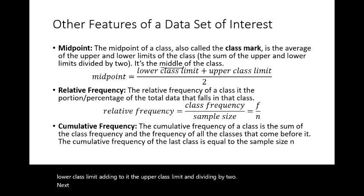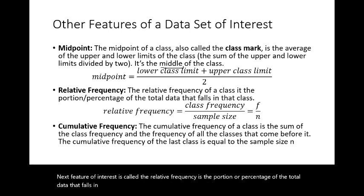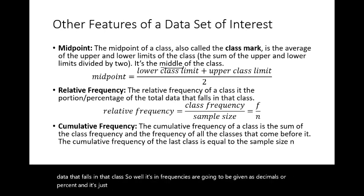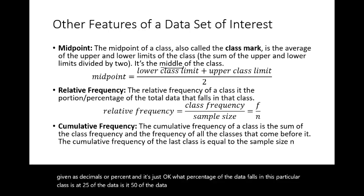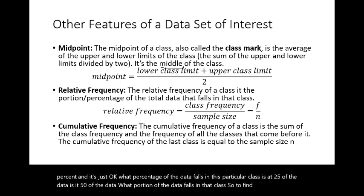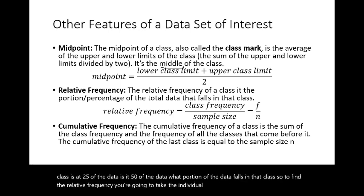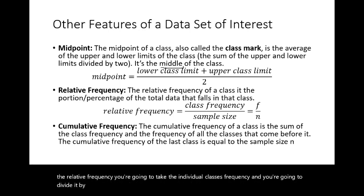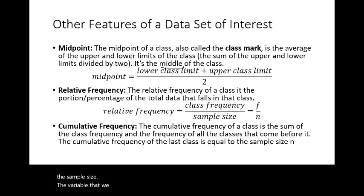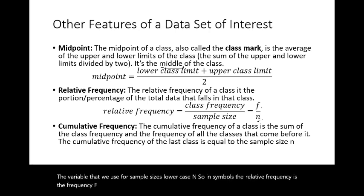The relative frequency is the portion of the total data that falls in a class, expressed as a decimal or percent. To find it, take the class's frequency f and divide it by the sample size n. We use lowercase n for sample size and uppercase N for population size.